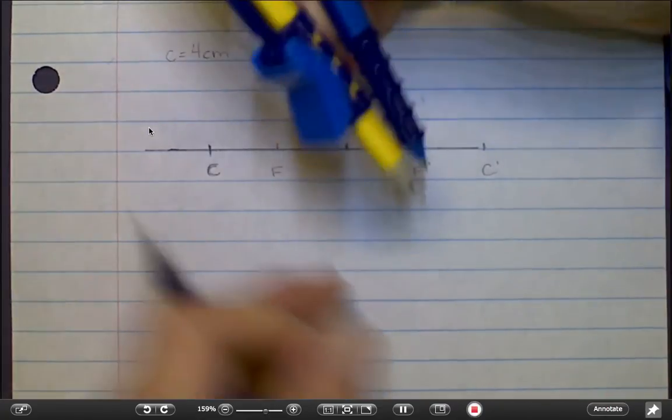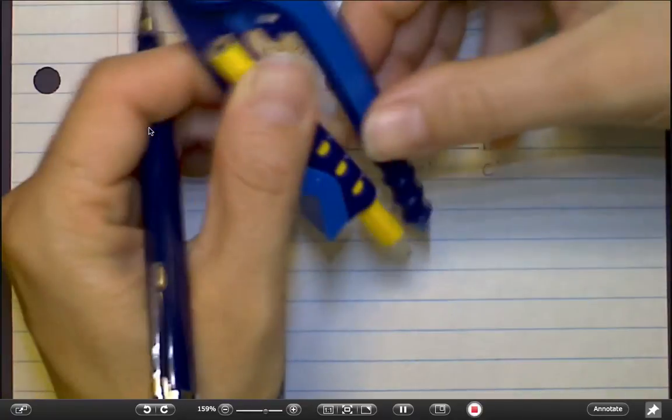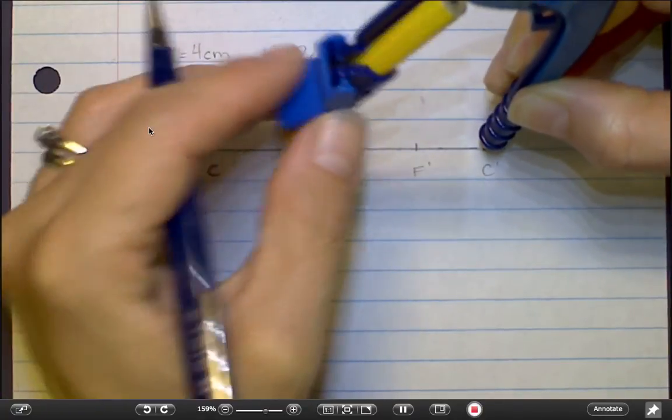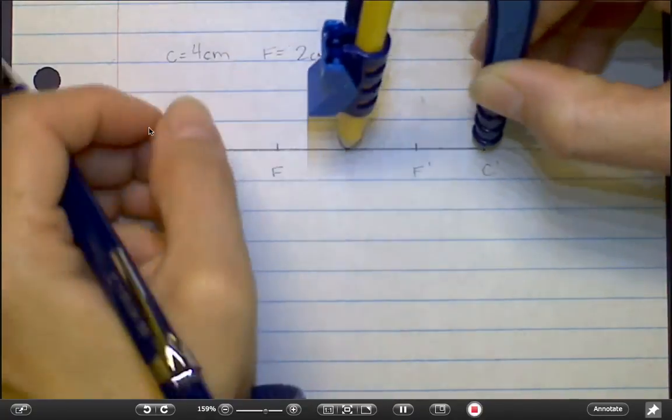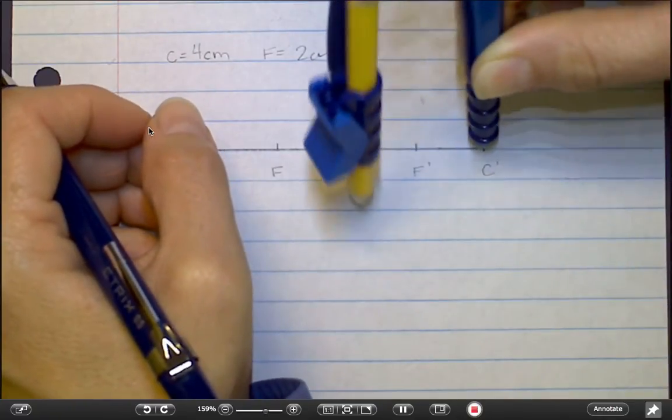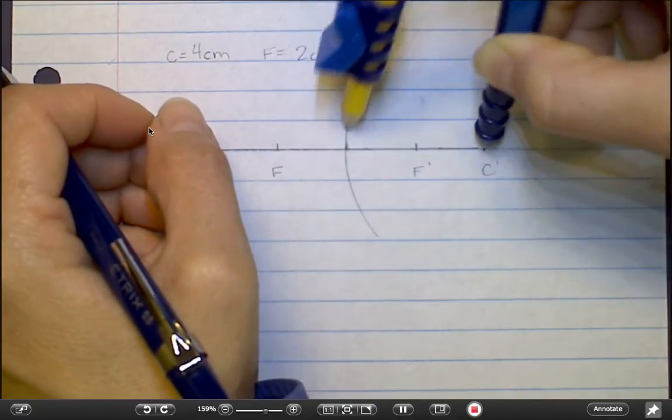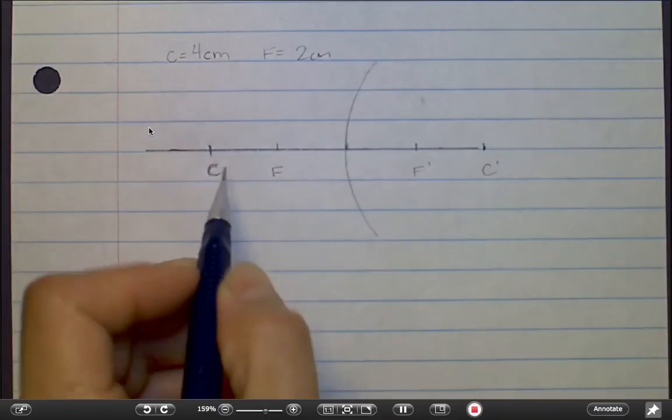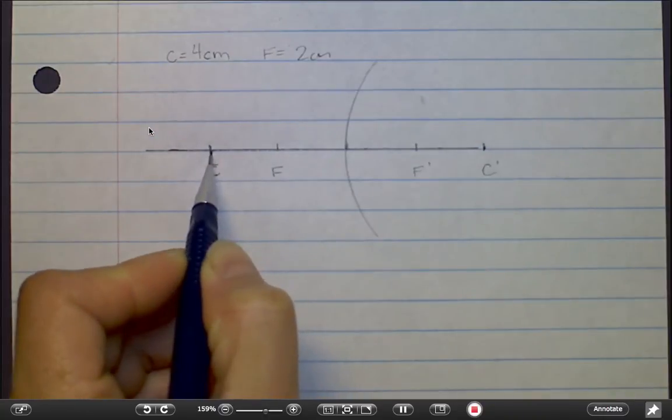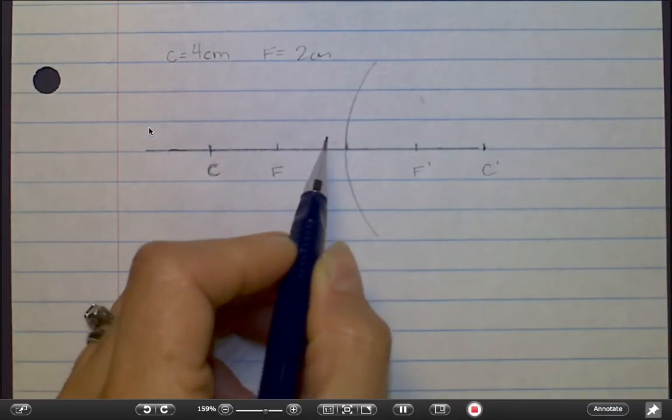By the way, draw an accurate convex mirror. You can use a compass if you like or you can eyeball it. I know that this is a convex mirror because the object will go on this side and the mirror bulges toward me.